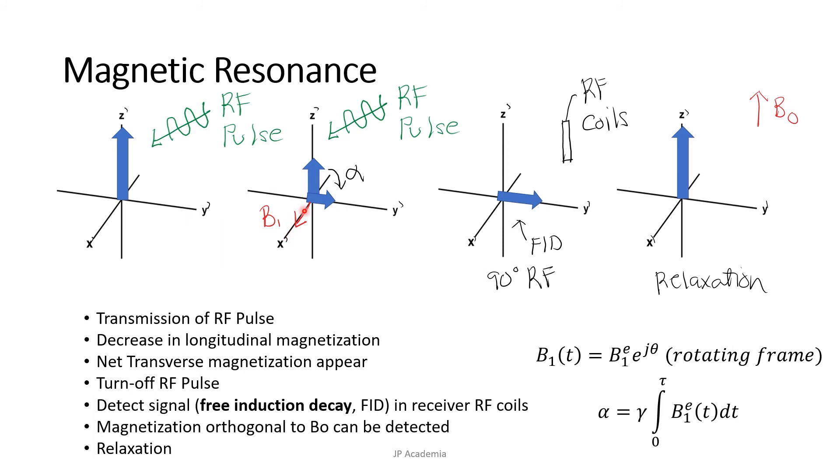The net transverse magnetization appears at Y prime as we apply B1 along the X prime. When we turn off the transmission RF coil, we can detect a signal called the free induction decay or FID using the receiver RF coil.